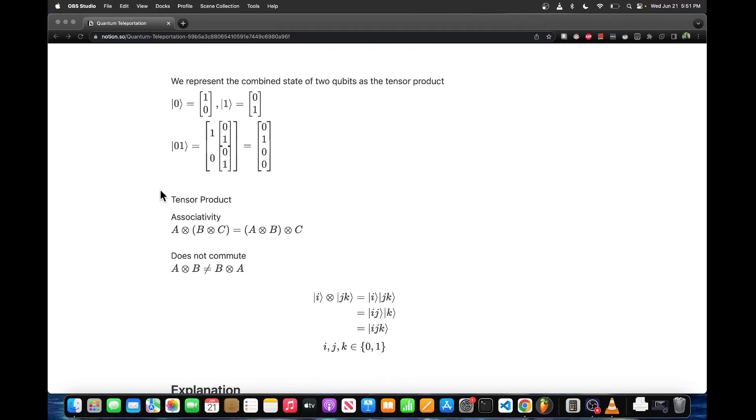When we have multi-qubit systems, the way we write that to represent the entire system is a tensor product of the individual qubits. For example, if we have two qubits, one in state 0 and one in state 1, the tensor product would look like this, and the overall system could be represented in vector form. These elements in the vector correspond to 0,0, 0,1, 1,0, and 1,1.